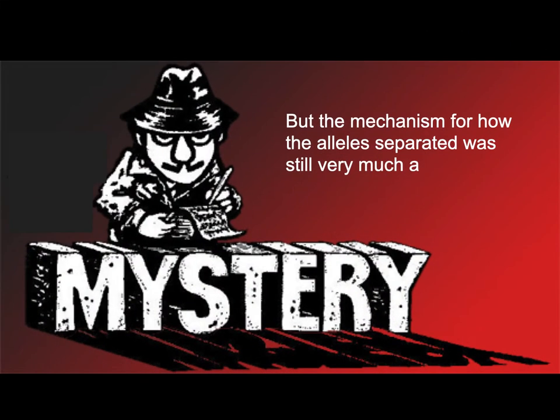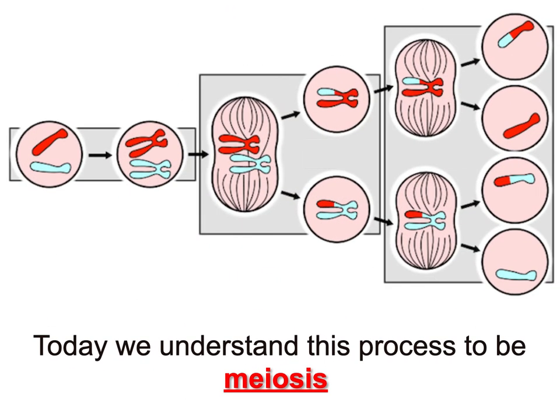It was a big mystery still to Mendel and to everybody at the time as to the mechanism that separated these alleles. He knew they were inheriting one from the mother plant and one from the father plant, but he didn't really know how that happened. We had to understand DNA before that was really possible. So enter what we call meiosis, which is a process that takes a cell and converts it into either four sperm or four egg cells, and in so doing, divides up the DNA — segregates those alleles when we're all said and done.